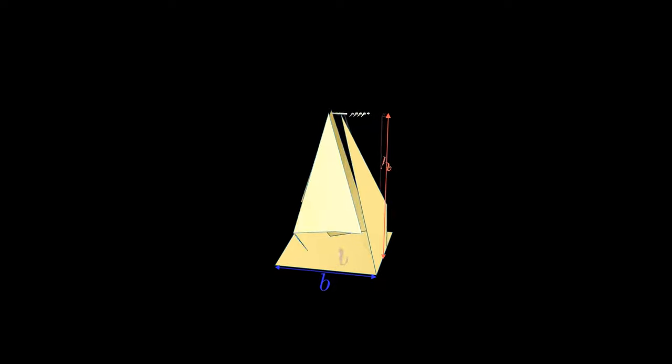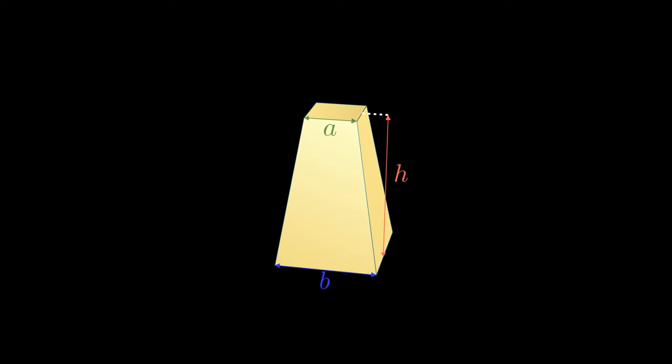In the case of truncated pyramids, there are two side lengths that we are concerned with. The side lengths on the bottom will be referred to as the major base length, represented by the variable b, and the side lengths on the top as the minor base length, represented by the variable a.